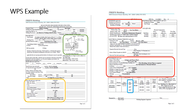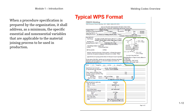Here's a WPS example. You can see in the green where I've outlined joint design — there are a lot of different ways you can address that. When a procedure specification is prepared by the organization, it shall address as a minimum the specific essential and non-essential variables applicable to the material joining process used in production. On a WPS for ASME Section 9, you need to address all the essential and non-essential variables — you're not getting around it.